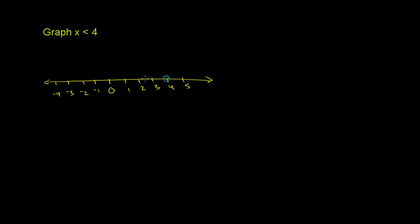And to show that we're going to do all of the values less than 4, we want to shade in the number line below 4, going down from 4, just like that. And then we can just shade in the arrow just like that.